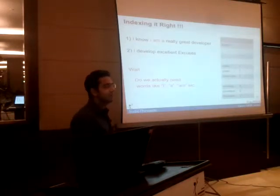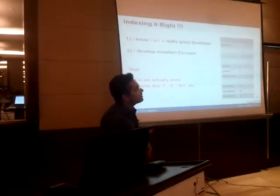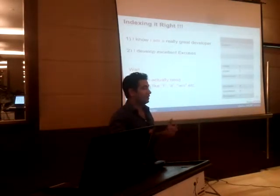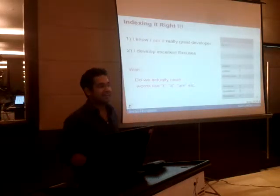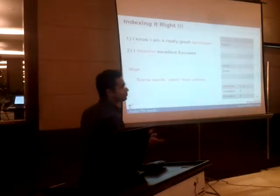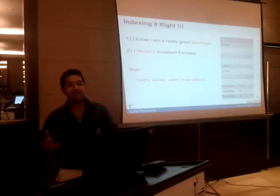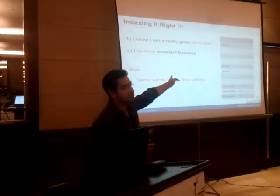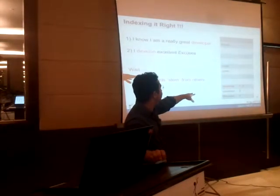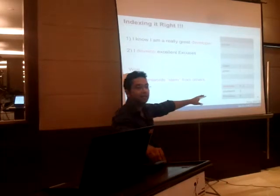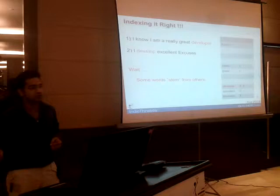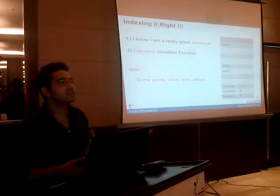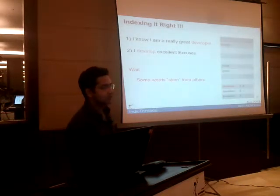The next step is stemming — considering words that stem from each other. 'Develop' and 'developer' stem from the same root. So you can index the word 'develop' against both document IDs 1 and 2. Even if you search for 'develop', you'll get the second result but also the first, naturally at a lower relevance score. The relevance would be lower, but you still get the result.